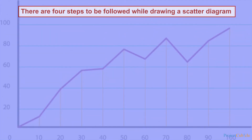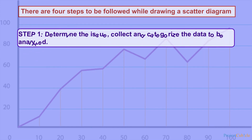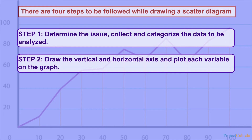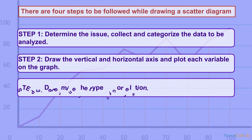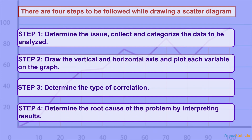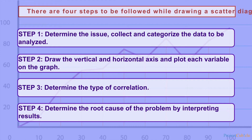There are four steps to be followed while drawing a scatter diagram. Step 1: Determine the vertical and horizontal axis and plot each variable on the graph. Step 3: Determine the type of correlation. Step 4: Determine the root cause of the problem by interpreting the results.